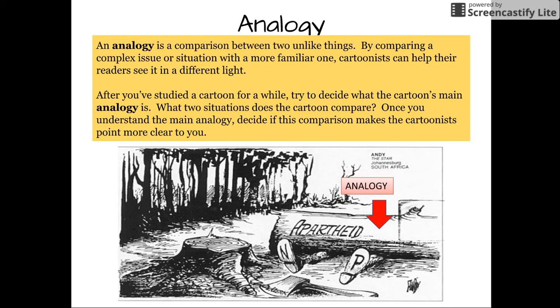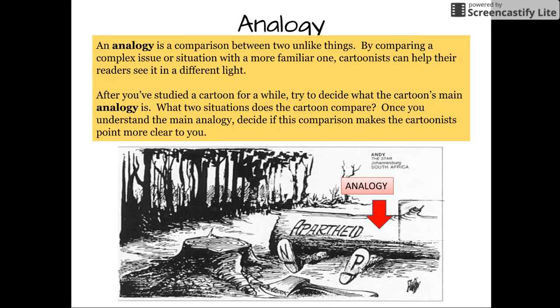An analogy is a comparison between two unlike things. This is one of the more complex ideas in political cartoons, where the cartoonist compares a complex issue or situation with something more familiar. In the picture, the tree is labeled 'Apartheid' and the person underneath is labeled 'NP.' You'll need prior knowledge to understand that NP is the Nationalist Party, which was in charge in South Africa during the Apartheid — very extreme, rigid laws of discrimination. This is an analogy: the tree toppling and falling onto someone represents the Apartheid ending and collapsing onto the Nationalist Party, meaning when Apartheid ended, the Nationalist Party lost its control.